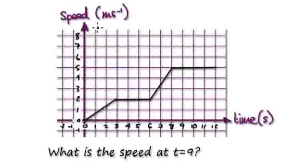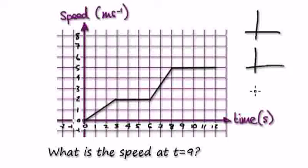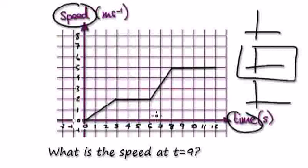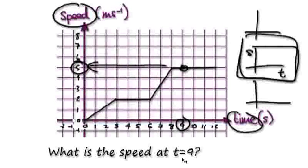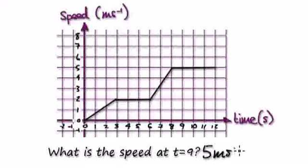Next one. Given this random graph, work out the speed at time equals 9. Press pause and have a go. Picture the three graphs in your mind. You've been given the speed-time graph — this middle graph — and you're asked for the speed at time equals 9. You've been given the speed-time graph and you're being asked about the speed, so again it's a matter of straight reading. The speed at time equals 9 is 5, so the answer is 5 meters per second.